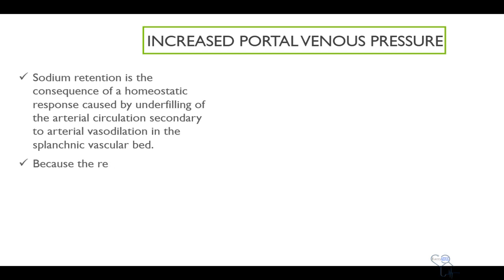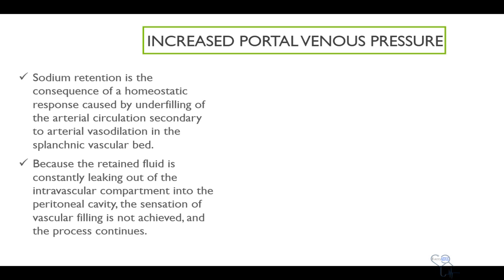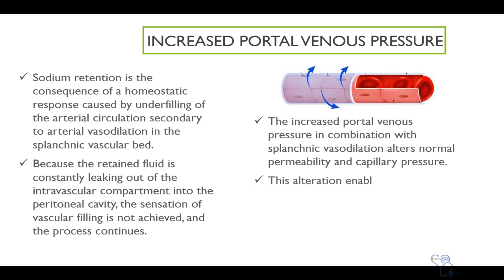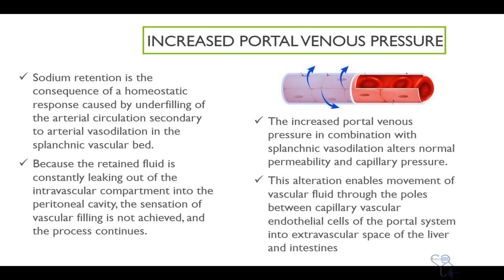Because the retained fluid is constantly leaking out of the intravascular compartment into the peritoneal cavity, the sensation of vascular filling is not achieved and the process continues. This increased portal venous pressure in combination with splanchnic vasodilation alters normal permeability and capillary pressure. This alteration enables movement of vascular fluid through the pores between the capillary vascular endothelial cells in the portal system into the extravascular space of the liver and the intestines.